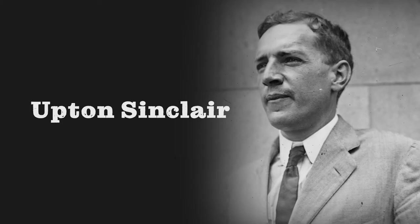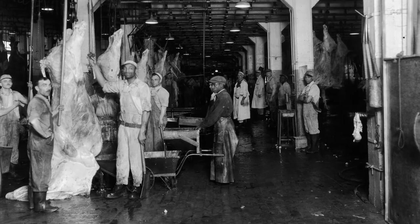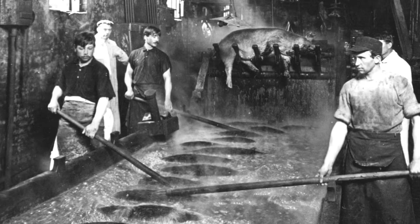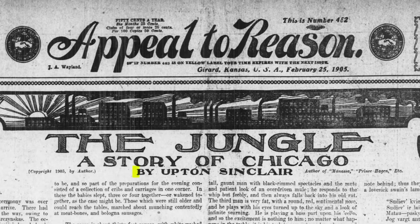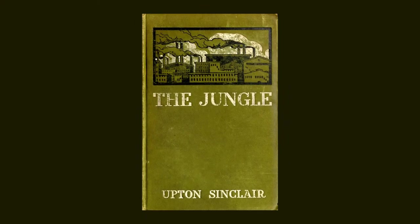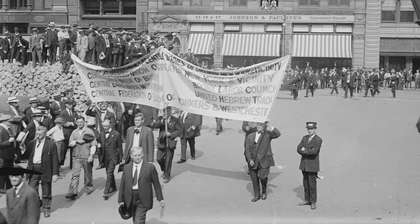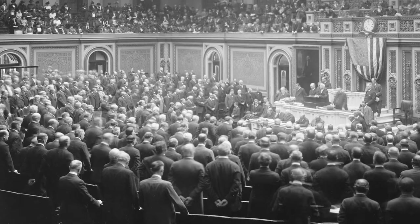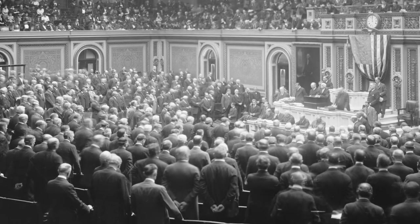In 1906, muckraking journalist Upton Sinclair exposed unsafe and horrid working conditions in America's meatpacking industry. His reports were first published in the popular socialist newspaper Appeal to Reason, and later compiled into his book The Jungle, which became a bestseller. Sinclair's investigative journalism raised public outcry, putting pressure on the U.S. government, which then passed laws for greater workplace safety and better working conditions in factories.